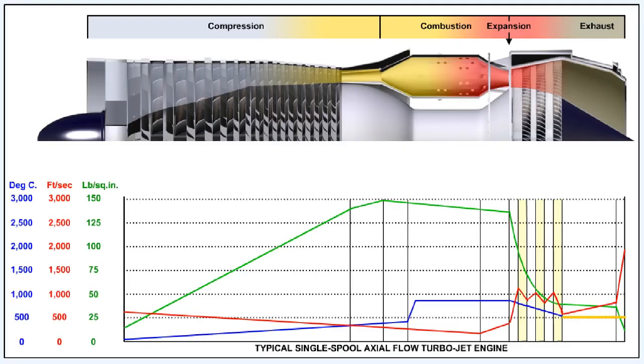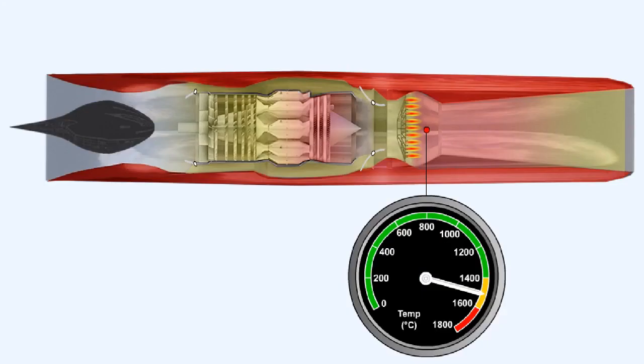The temperature of the gases entering the exhaust system can be between 550 and 850 degrees Celsius. This temperature can rise to as high as 1,500 degrees Celsius if an afterburner, sometimes called a reheat system, is used.